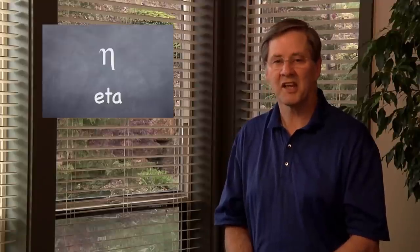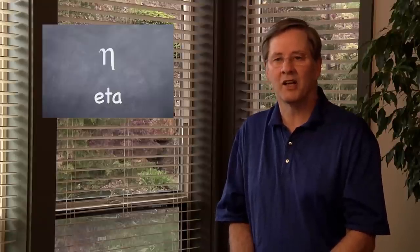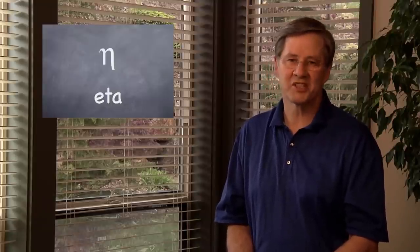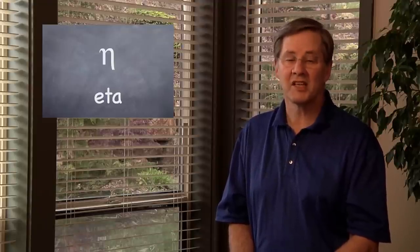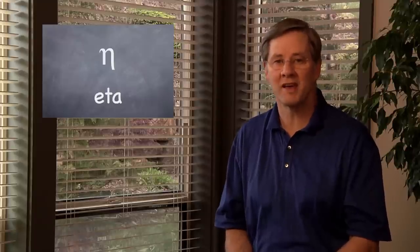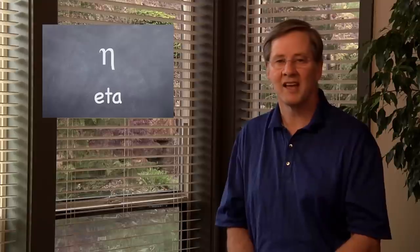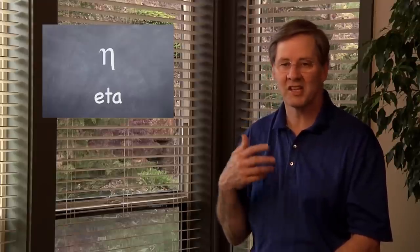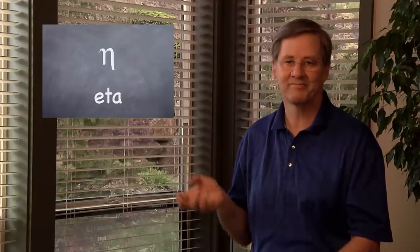The next letter is the long E vowel called eta. I know it looks like an N, but it's the eta — a long E class vowel. We have this in English, for example, in the word 'obey.' So eta is the A sound as in the English word 'obey.' We think of it as an E class vowel, but it's pronounced 'A.'